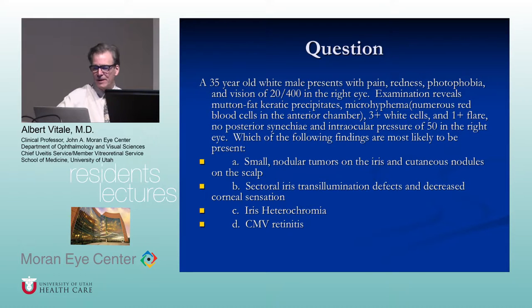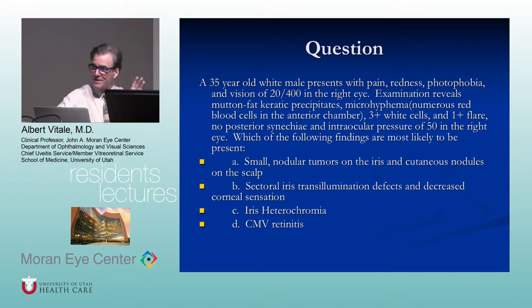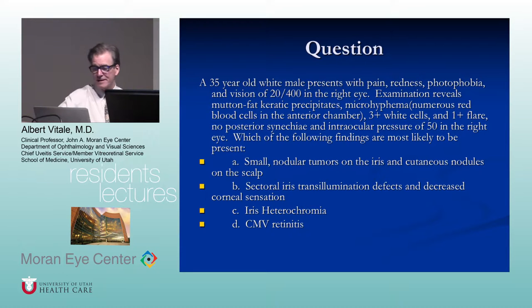A 35-year-old white male presents with pain, redness, photophobia, and very poor vision in his right eye. He has mutton fat keratic precipitates, a microhyphema, red blood cells in the anterior chamber, white cells and flare, no posterior synechiae, and intraocular pressure of 50. This suggests hypertensive uveitis — probably herpetic uveitis first. The iris becomes ischemic, which is why you can get some hyphema.